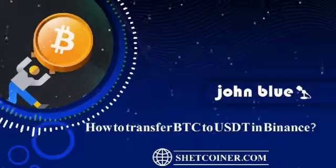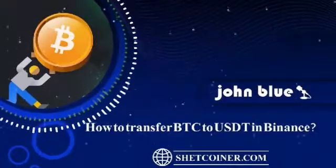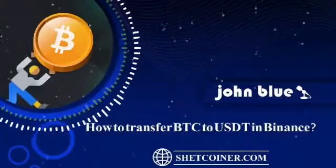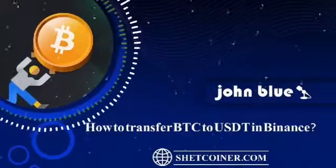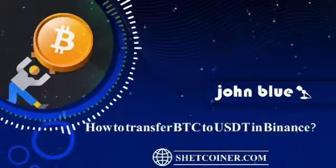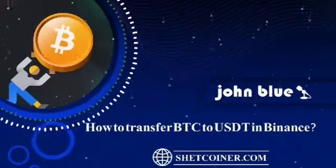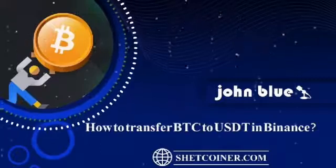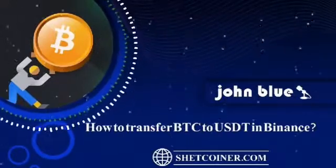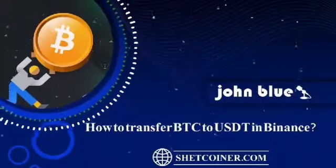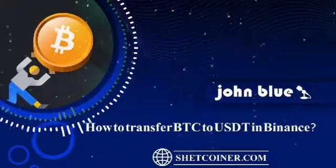Number five: enter the amount of BTC that you want to convert to Tether in the first text box. Number six: find and select Tether in the bottom field. Number seven: click on Preview Conversion to see the preview of the conversion you are trying to make.